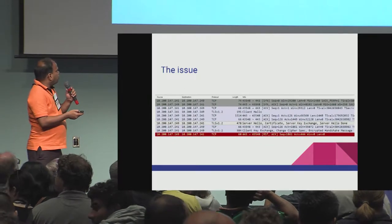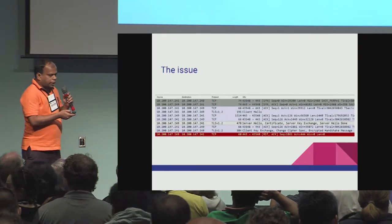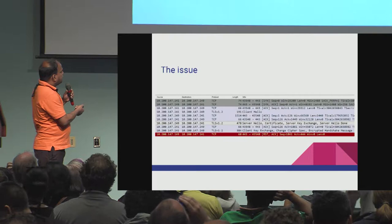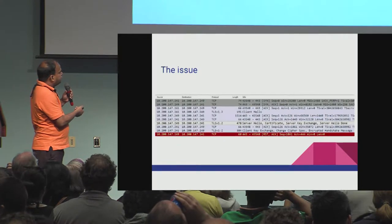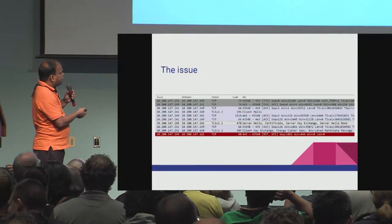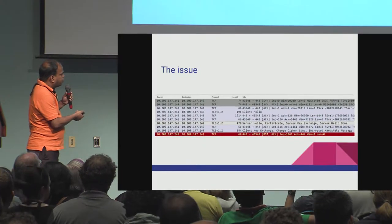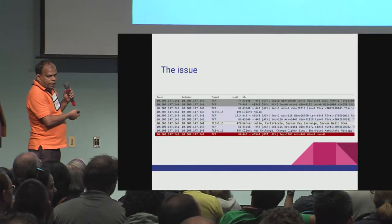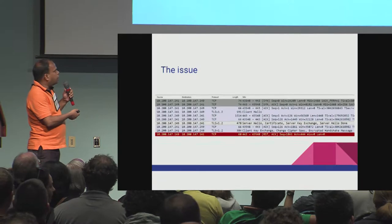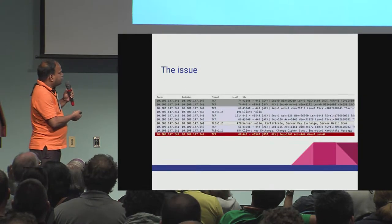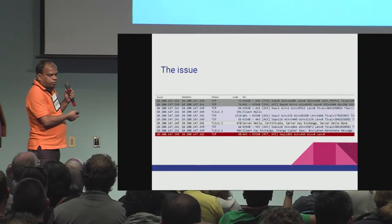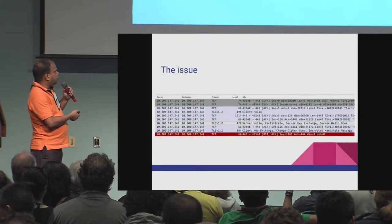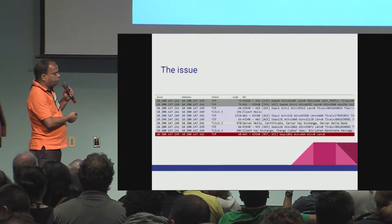After particular investigation, I found that after the client sent the client key exchange, change cipher spec, and encrypted handshake message, it will typically expect a similar change cipher spec and encrypted message from the server, but instead I was directly getting a TCP reset.